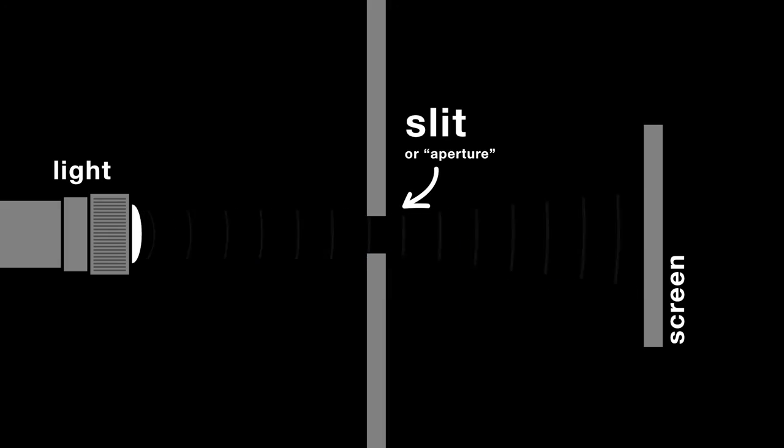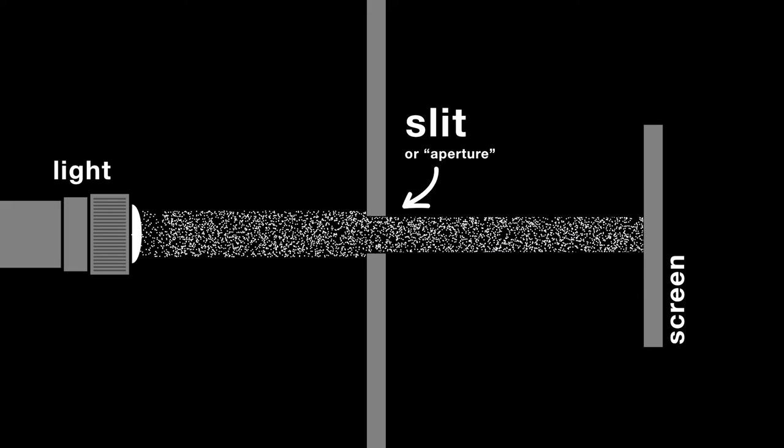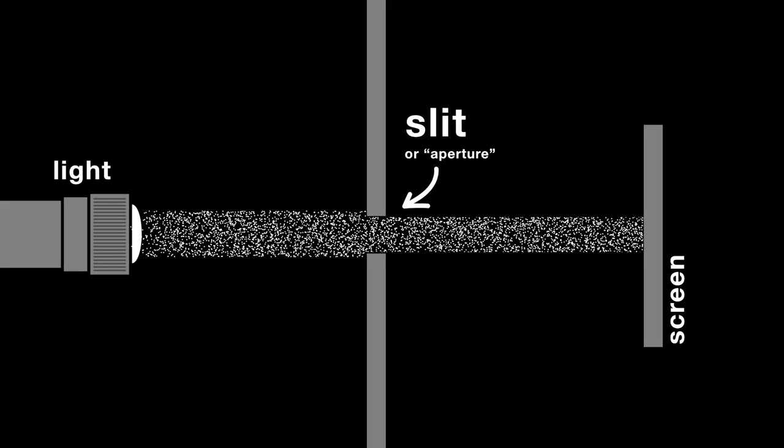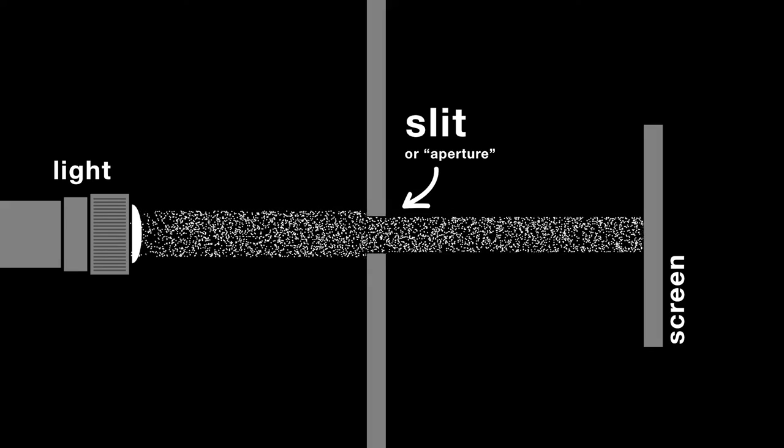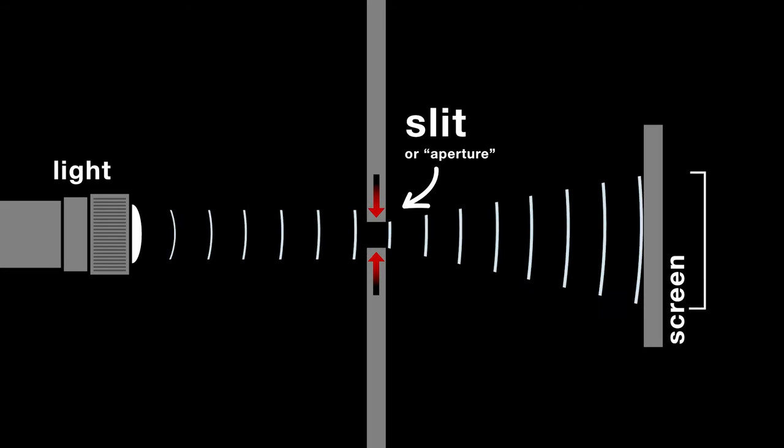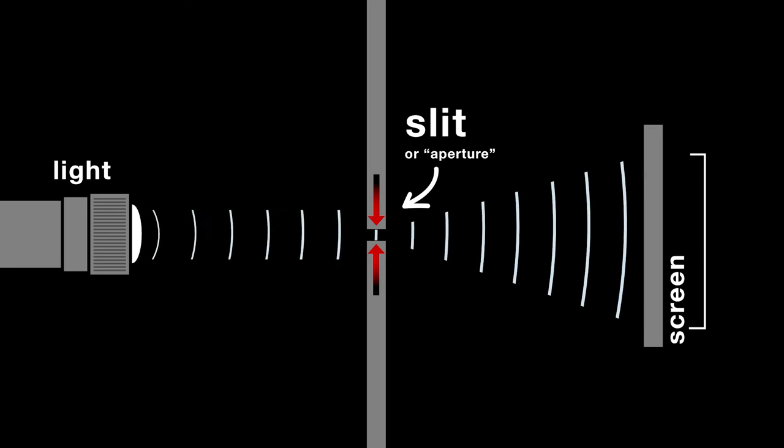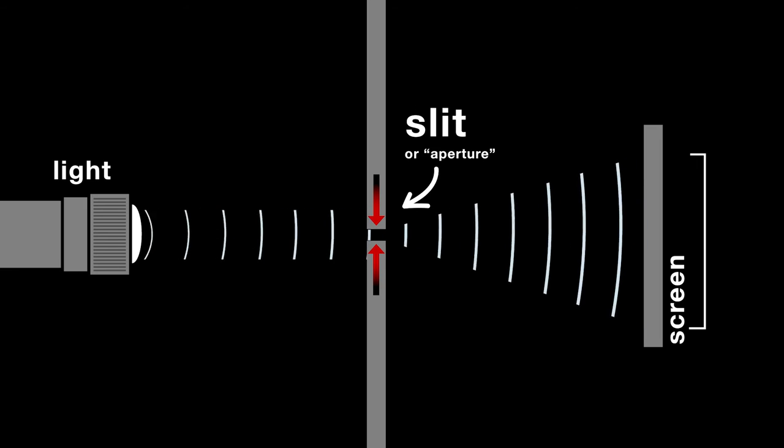If light were a particle, then what we would expect is that the spot of light that we would see on a screen would be the same size as the aperture. However, as we shrink that aperture and make it smaller and smaller, we see that the light spreads out more and more.